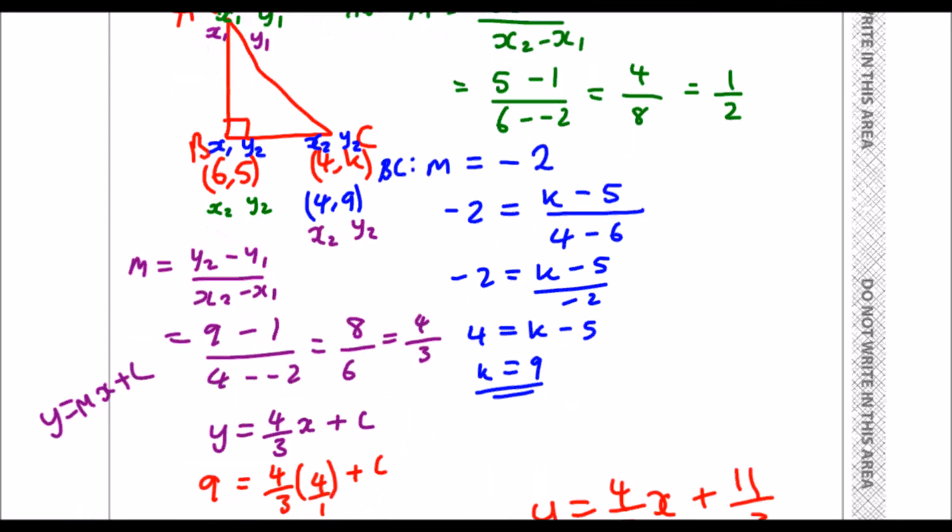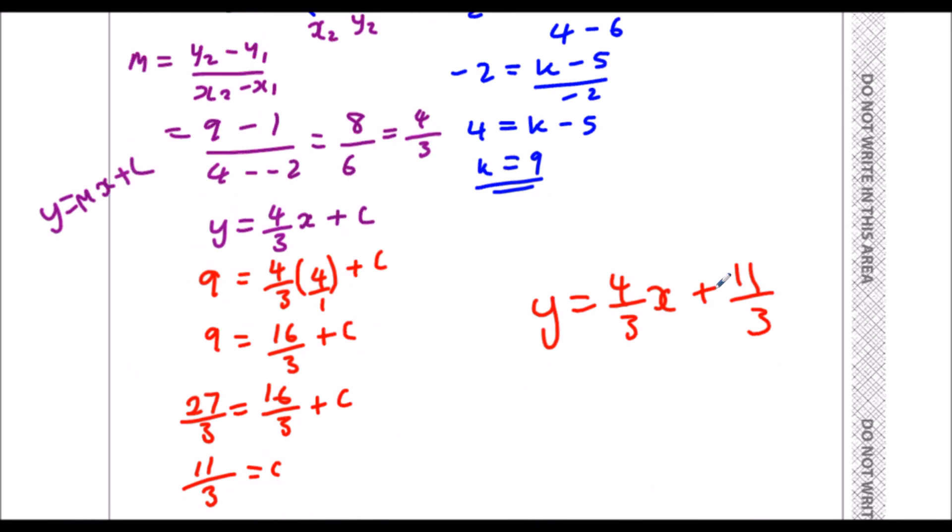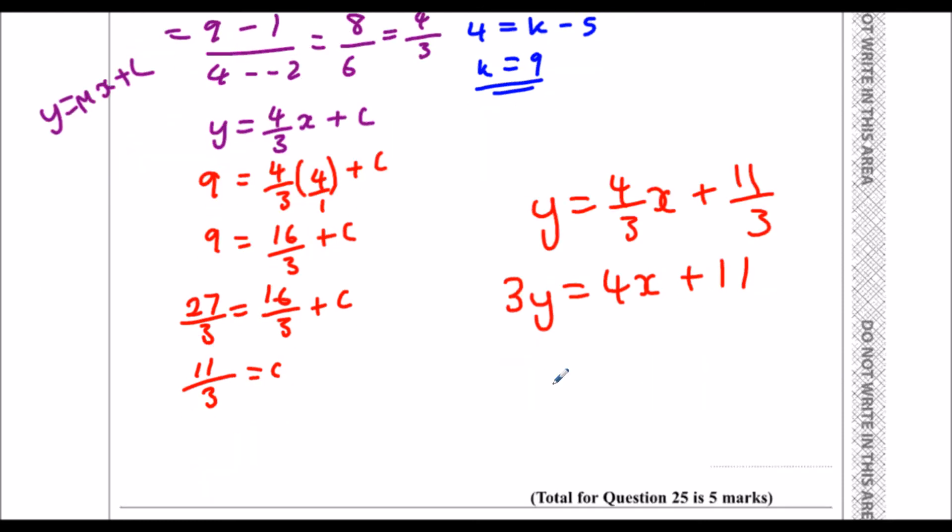They wanted AY plus BX equals C. So if I multiply everything by 3, 3Y equals 4X plus 11. And then minus the 4X on both sides. 3Y minus 4X is equal to 11. And that's the equation of the line.